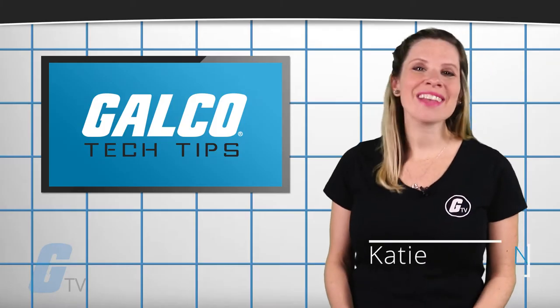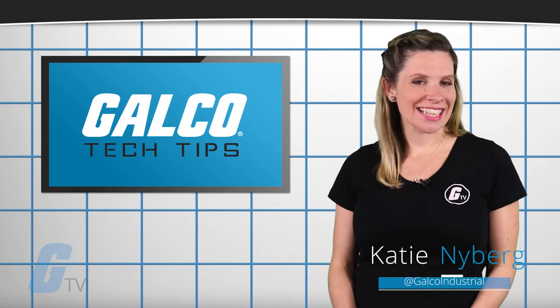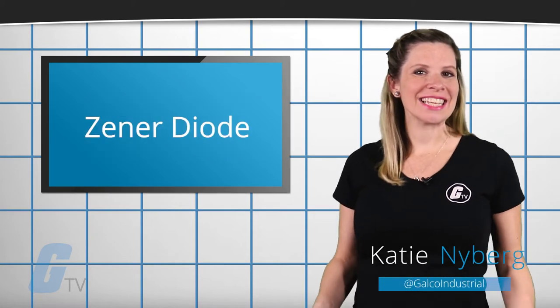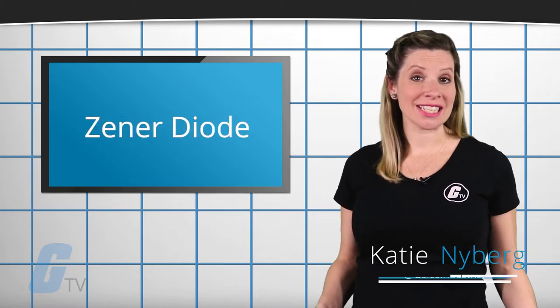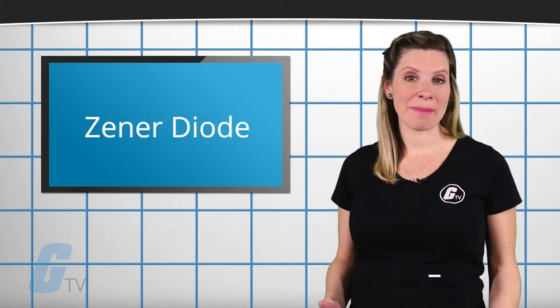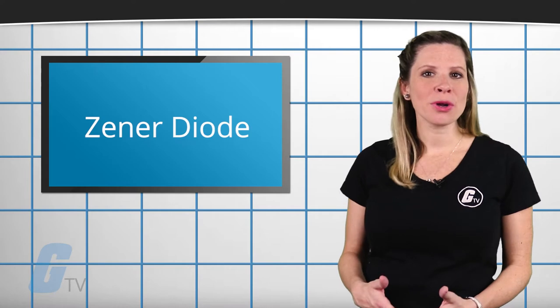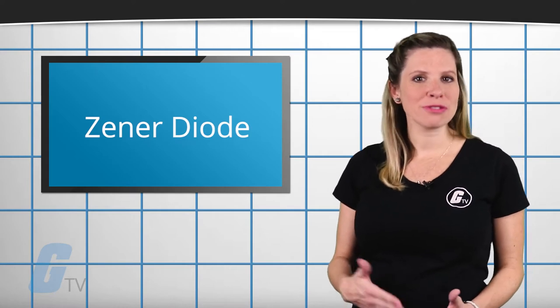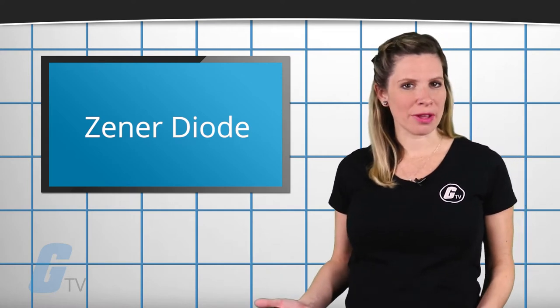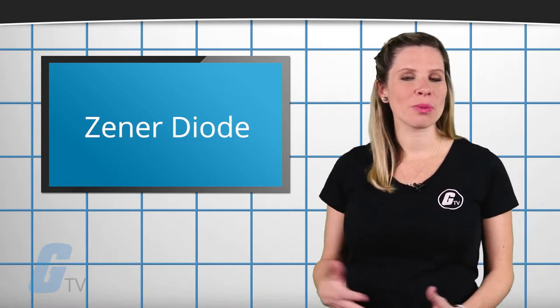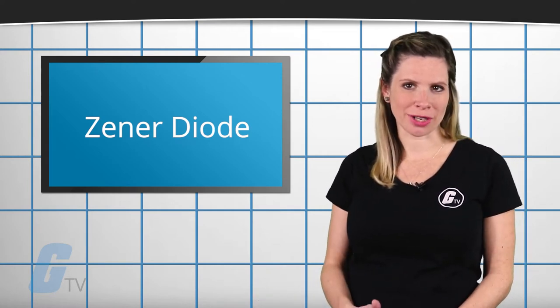Hi, I'm Kitty with your GalcoTV Tech Tip. A Zener diode is a silicon semiconductor device that permits current to flow in either a forward or reverse direction.